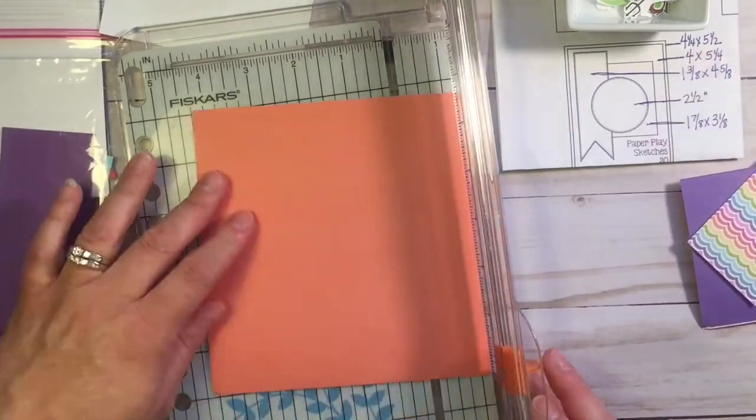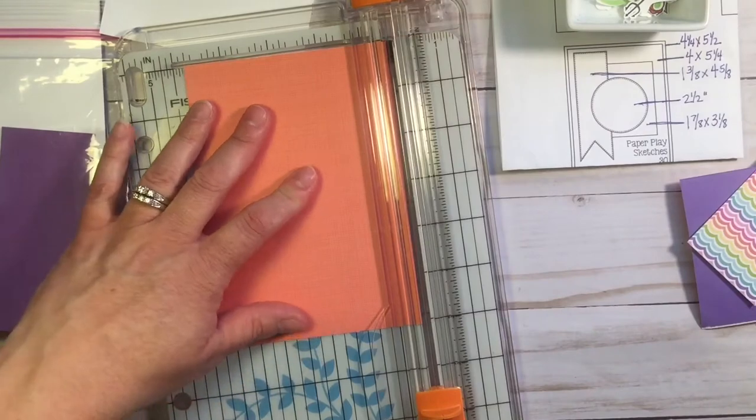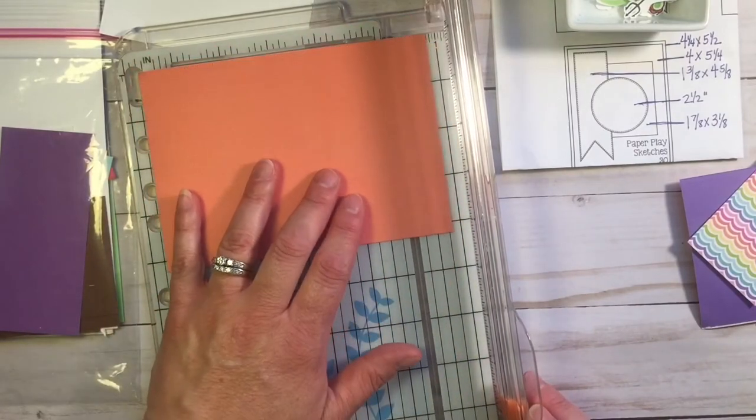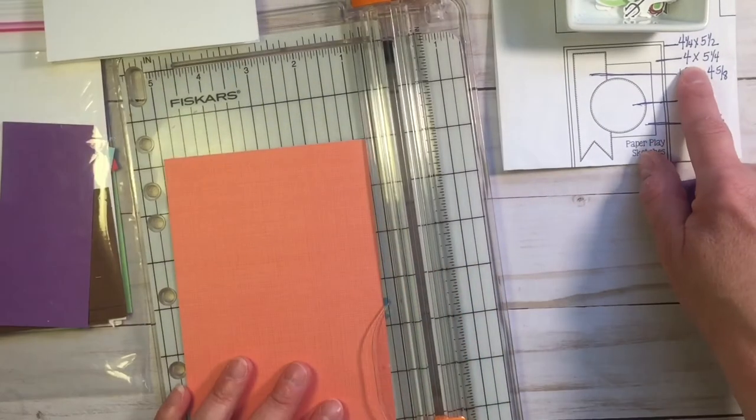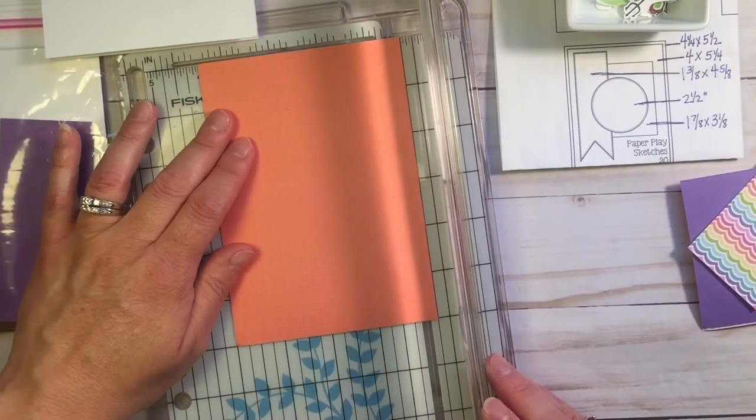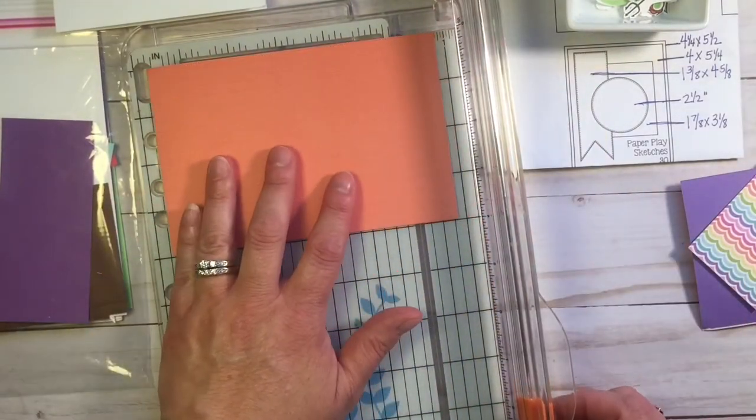So, here you're going to see me screw up. The base card is 4¼ by 5½, and initially I start cutting this panel to 4¼ by 5½, but I actually need that to be 4¼ by 5¼, so I realize that now, and I trim it down. I'm going to save this little scrap, because I can always use it later.